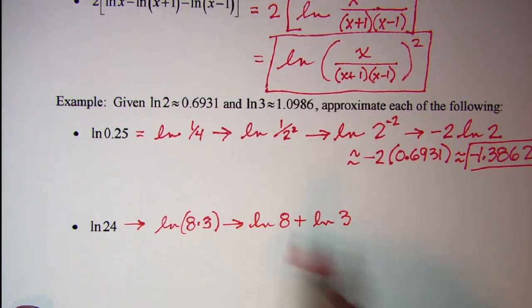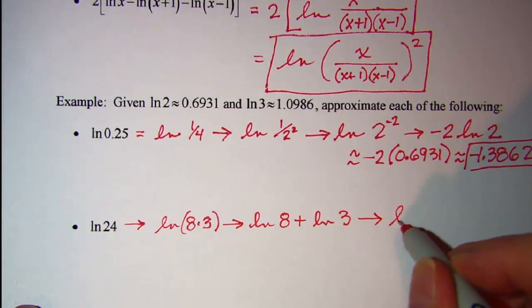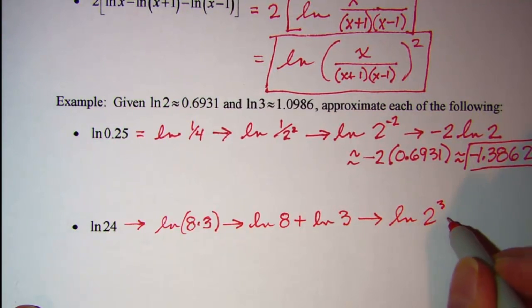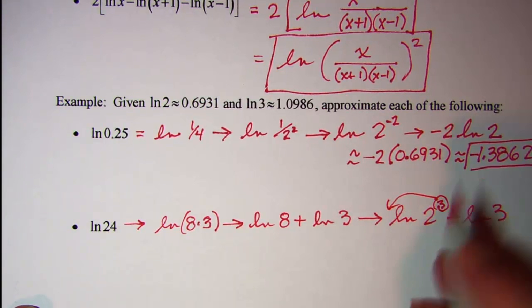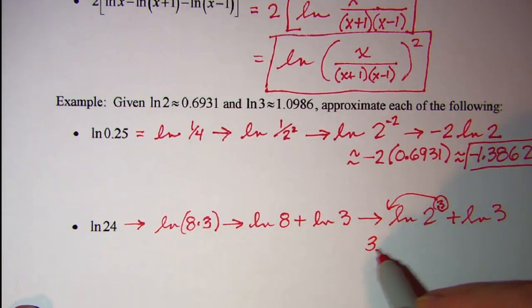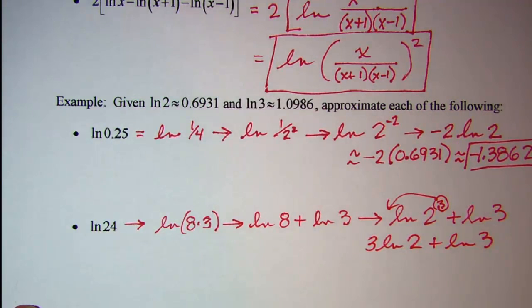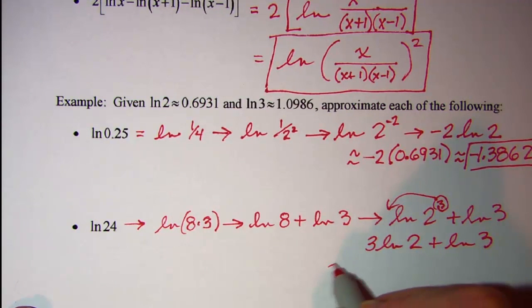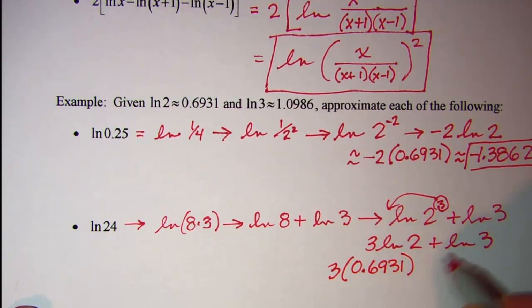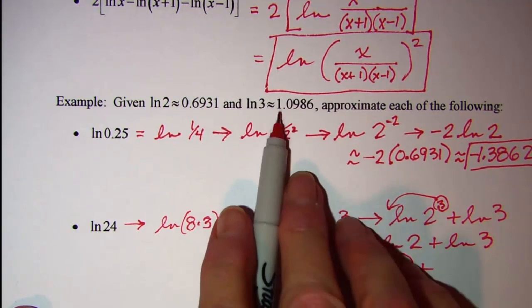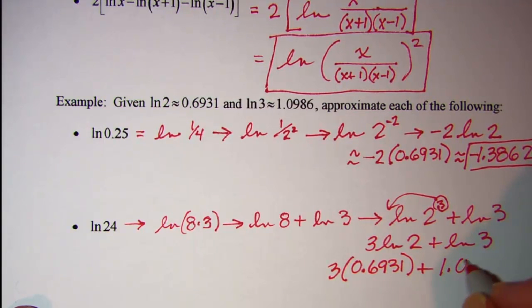8 is 2 to the 3rd power, so let's write that. ln 2 to the 3rd power plus ln 3. And then I can use property 4 to bring this exponent out in front of my logarithm. So I have 3 times ln 2 plus ln 3. So let's see, ln 2 is 0.6931 plus ln 3 is 1.0986.